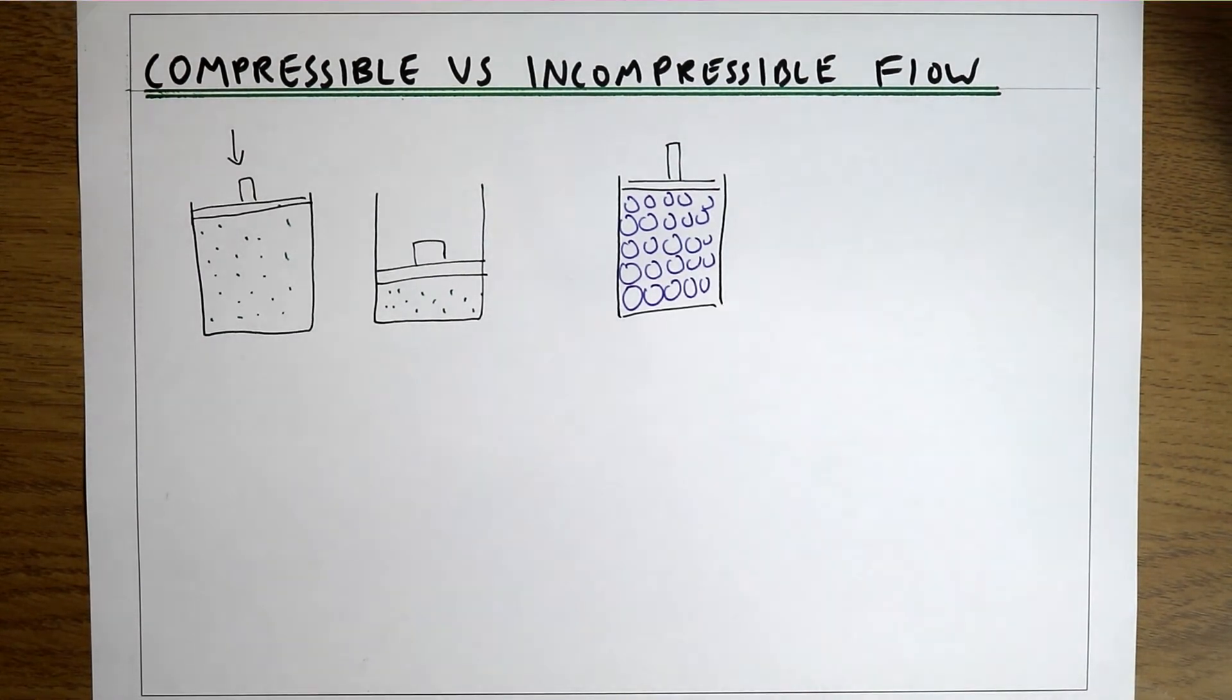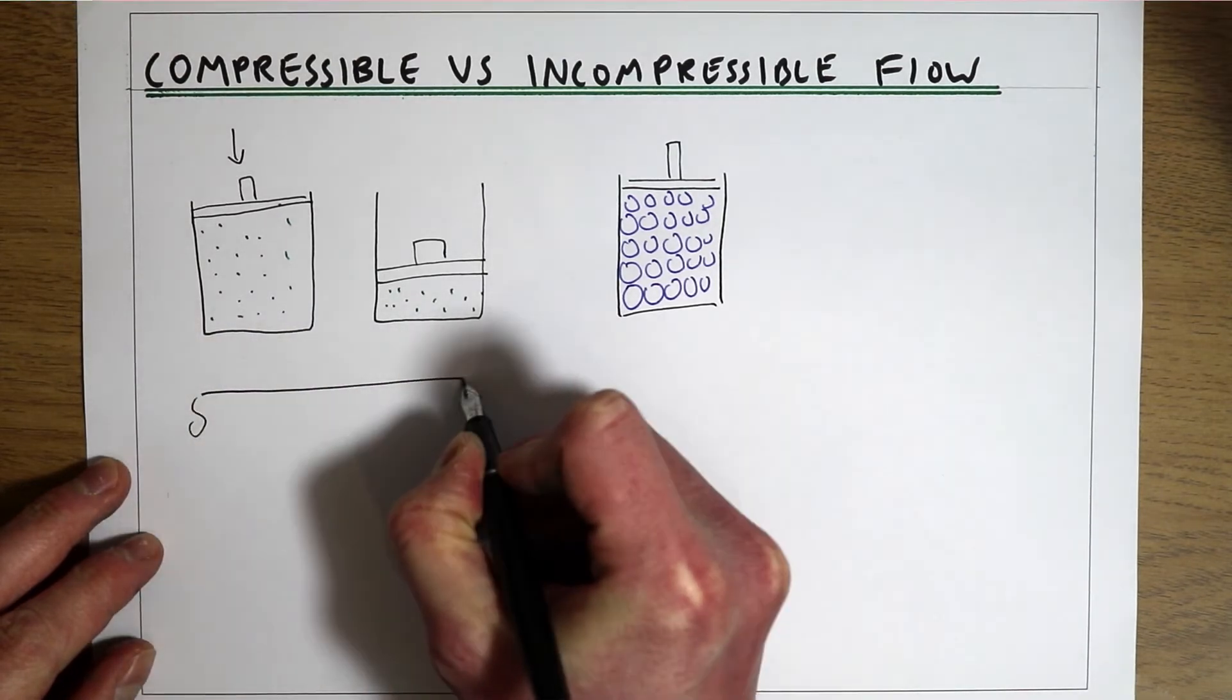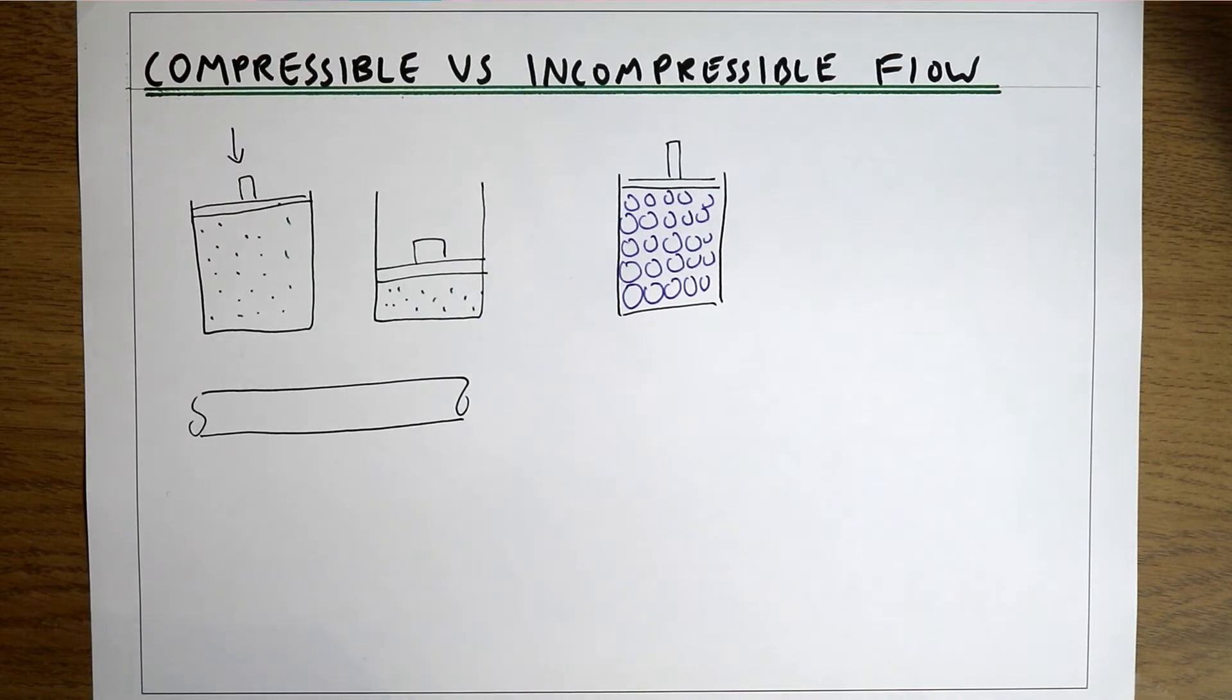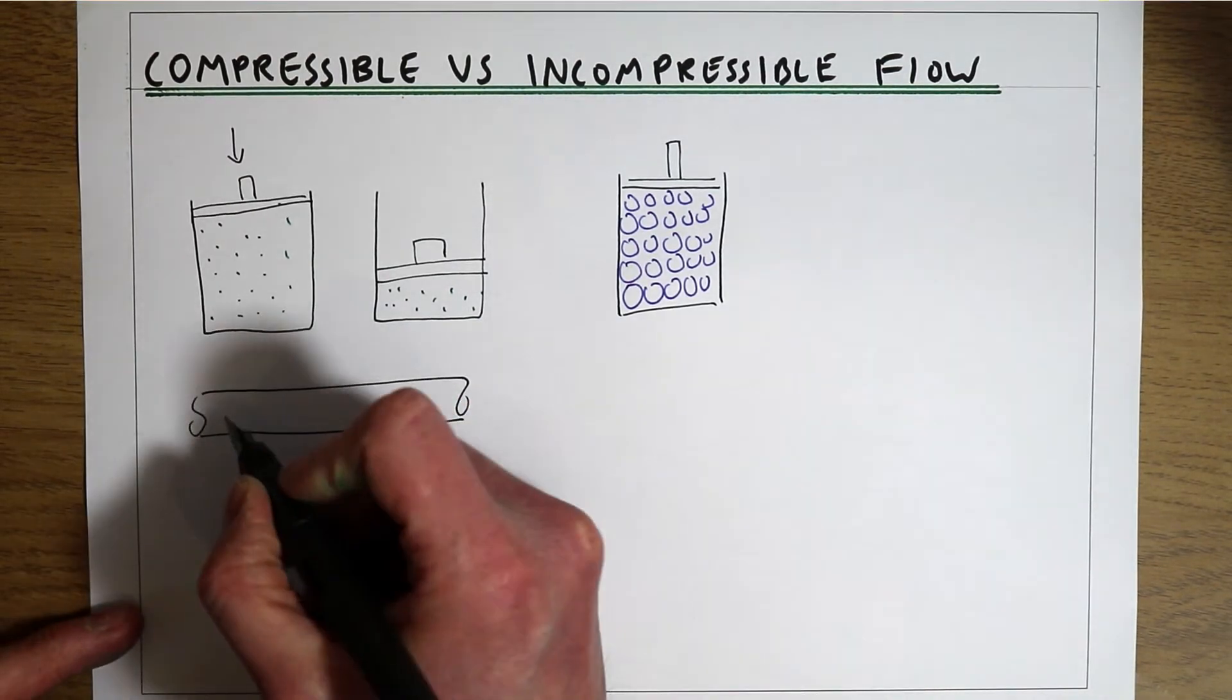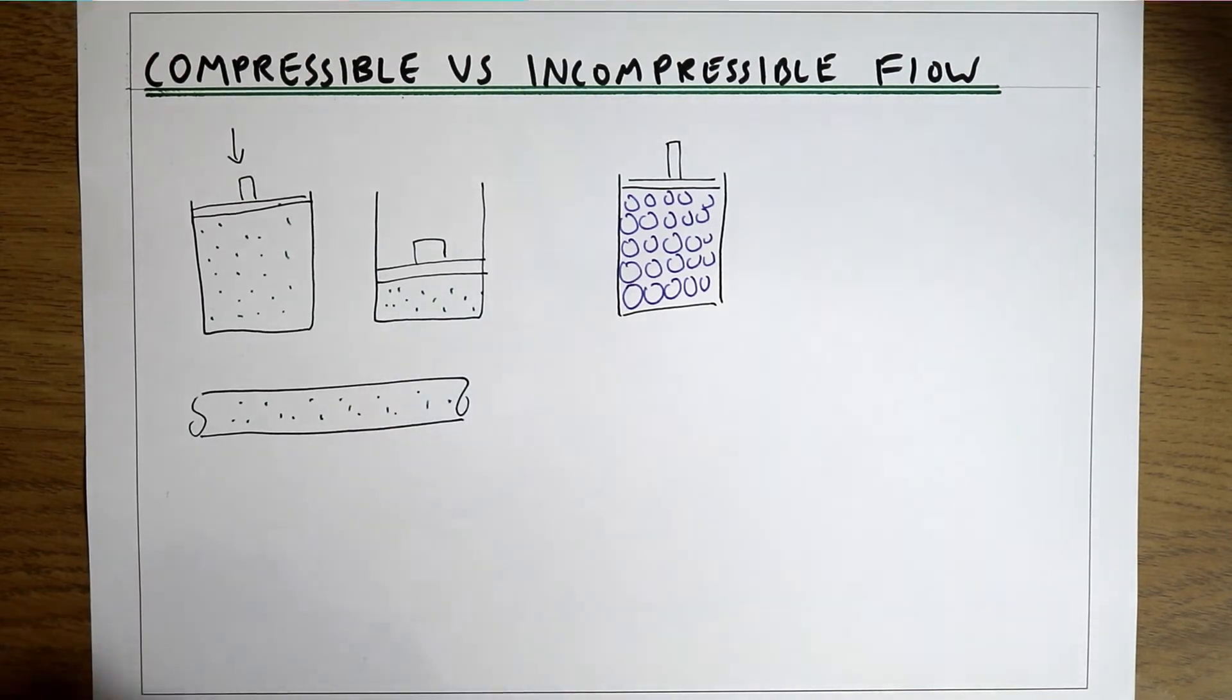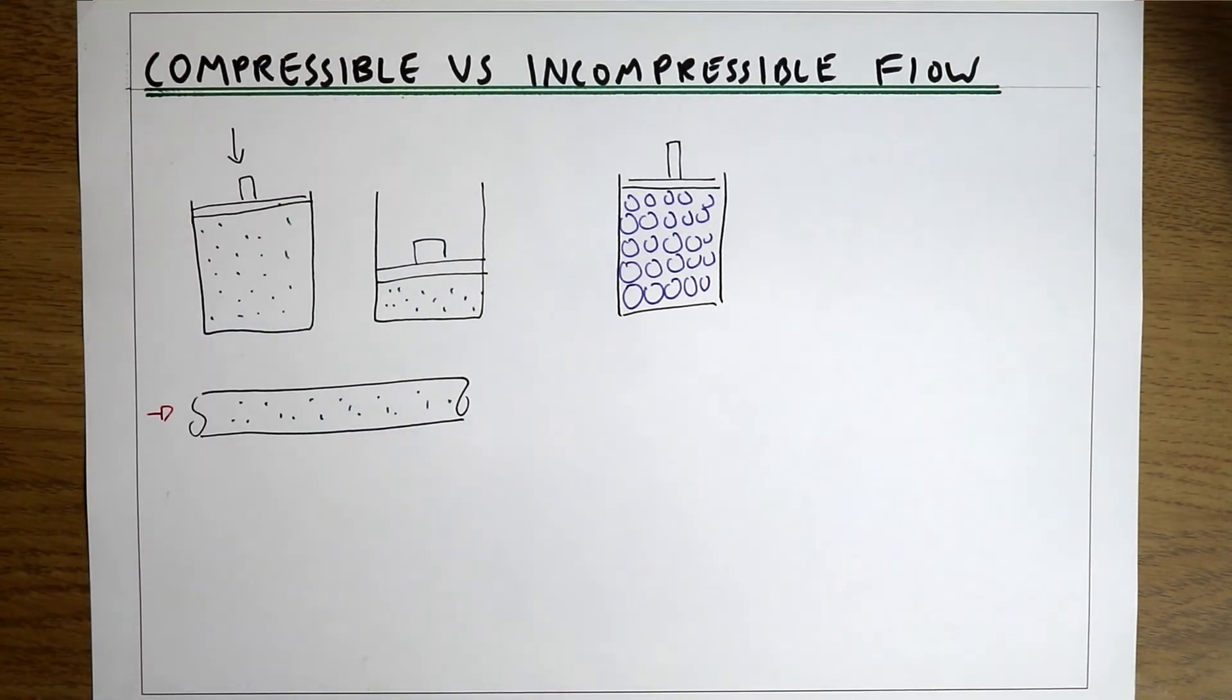If we put that into the context of flow, if we've got flow down a pipe that's compressible, so again we've got molecules with space in between them, then if we suddenly increase the pressure driving this flow, then we're going to get quite a complicated situation on our hands because we're going to get an increase in velocity but also probably going to be compressing the fluid, so that's going to make it very difficult to analyze.